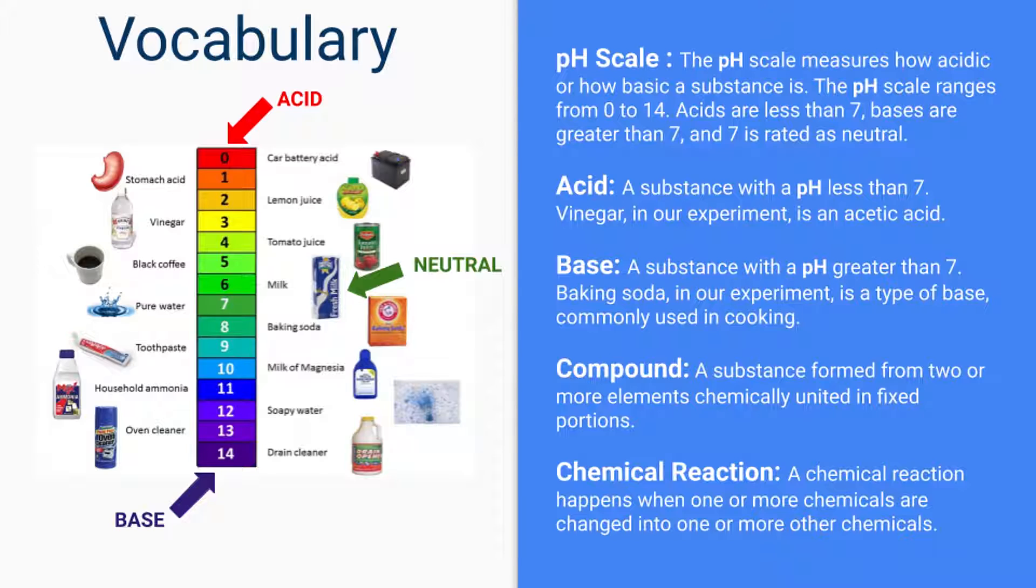A base is something with a pH greater than seven. Today, we're going to be using baking soda, which is a type of base commonly used in cooking. Can you find where it lives on the pH scale?